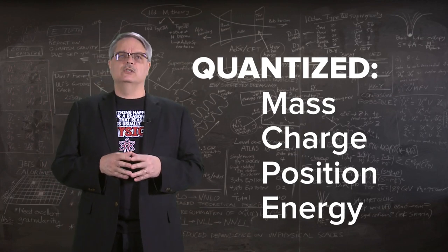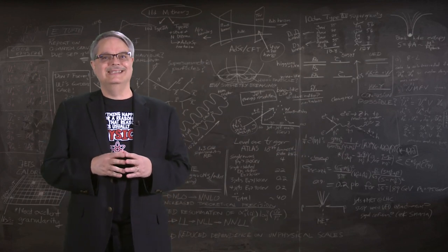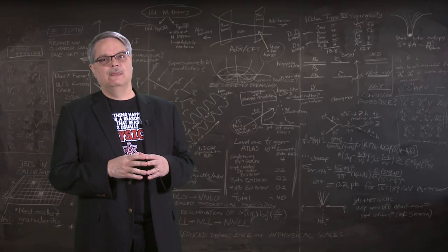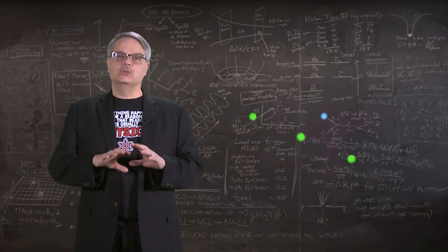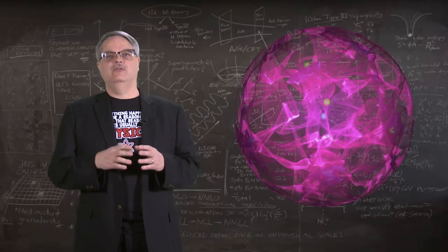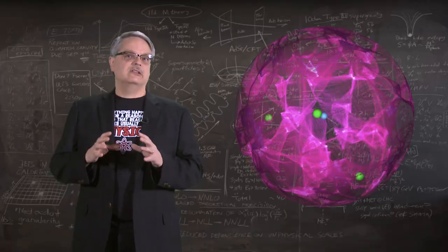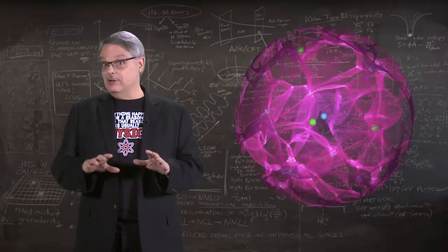Now, Schrödinger's equation was only a partial quantum theory and it didn't take into account relativity. What it did was take a proton and assume it was surrounded by a classical electric field. Now remember that classical fields are not quantized. They vary smoothly.